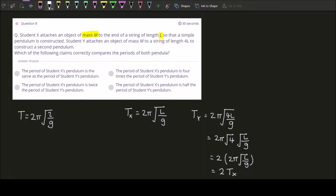So if you see the keywords is the same, that will be wrong. Student X is twice or student Y, that's the opposite. Ours is Y is twice of student X. The period of student X is 4 times, that's wrong as well. The period of student X is half the period of student Y. So that would be correct. You just need to shuffle a bit the equation. It just means that the period of student X is half of the period of student Y's pendulum. So the answer is D. That's it for question 8.